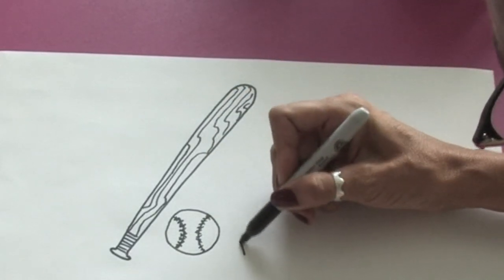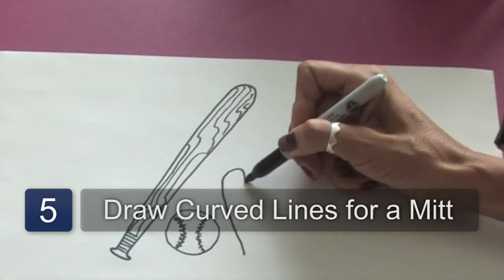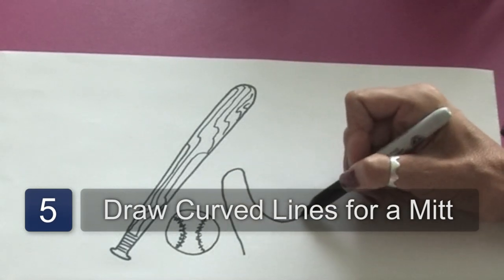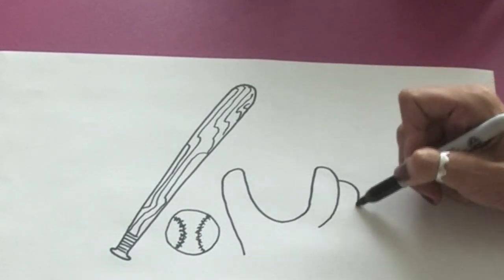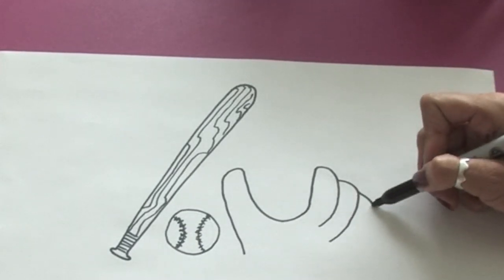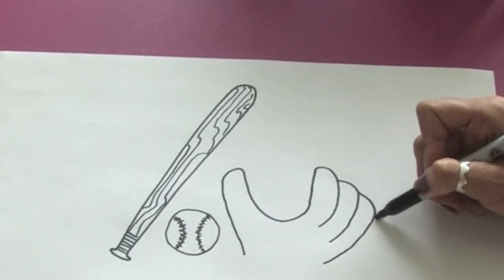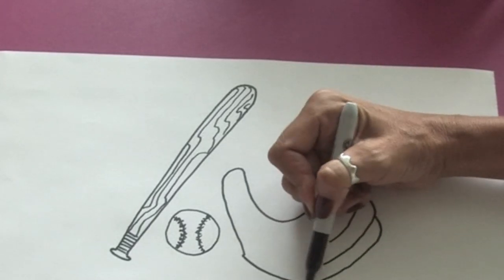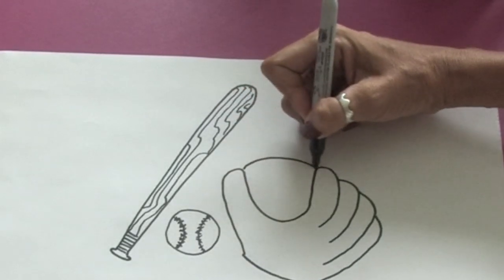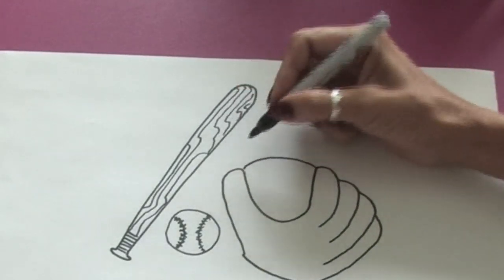Then, of course, we'll need a mitt. So we'll just do the basic outline of the glove. And if you think of a catcher's mitt, you want to get in all the fingers. So we'll just bring some lines down just like this. And then we'll connect the bottom of the mitt and the top.